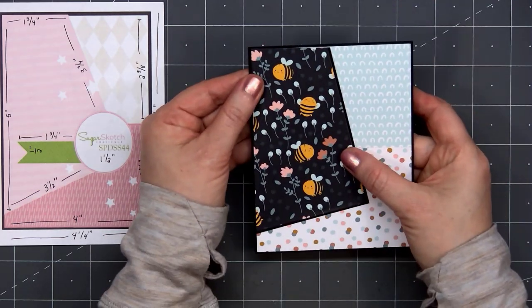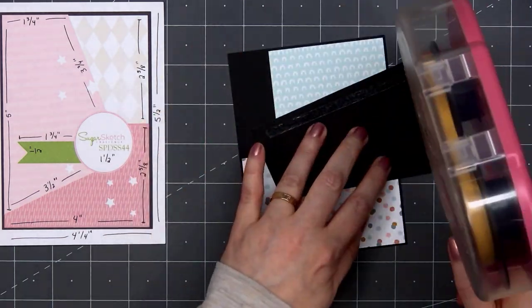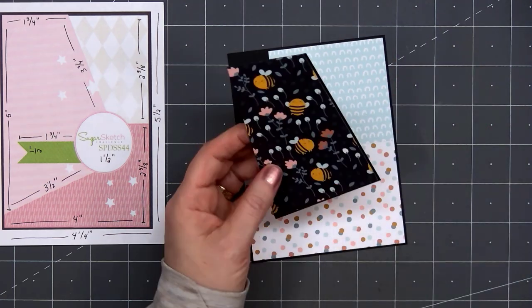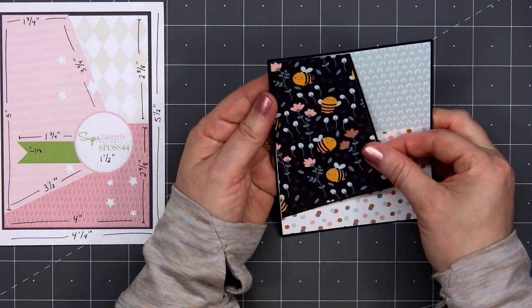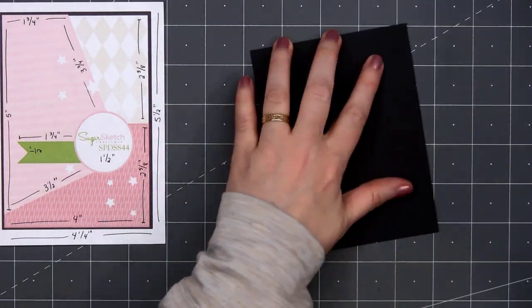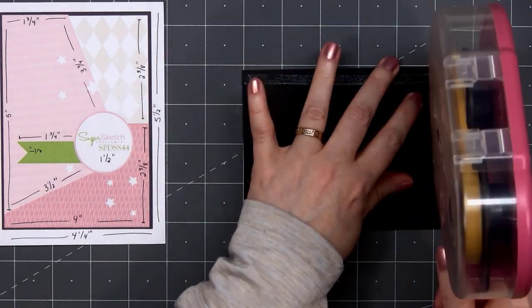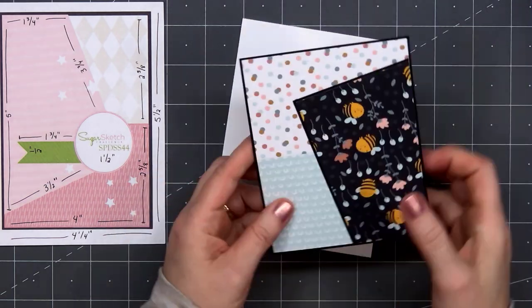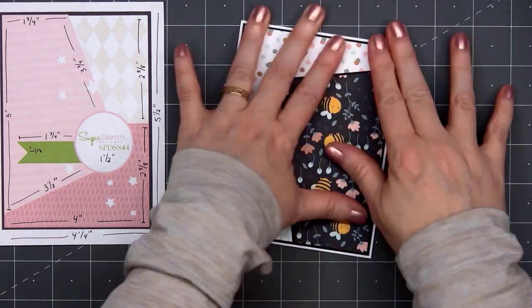So I decided to use this darling little bee paper. I cut the paper to 3 and a half inches wide, and I am layering it on some black cardstock. Then I put adhesive on the back, lay that piece on the card at an angle. I flip over my card front, use my scissors to trim off the extra.